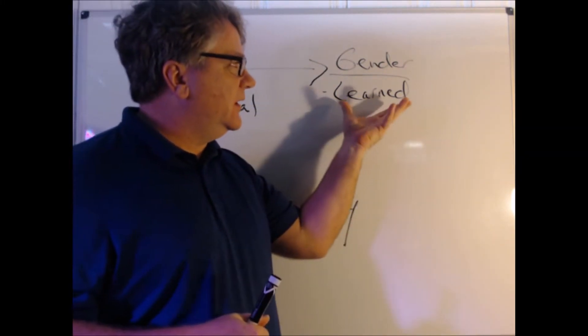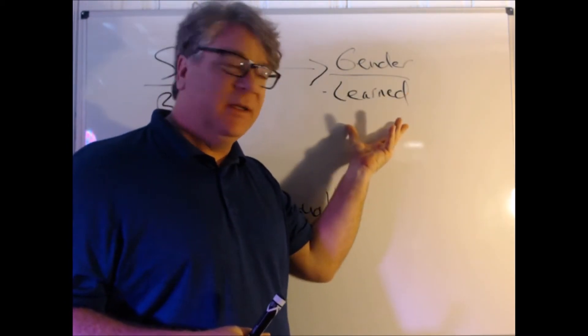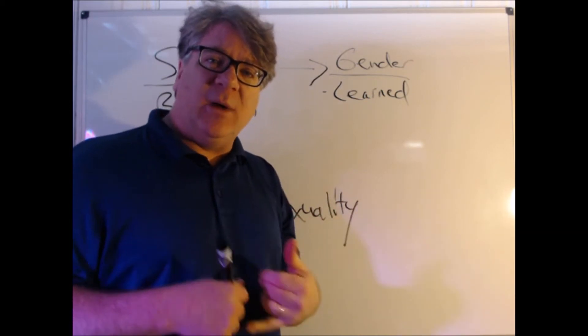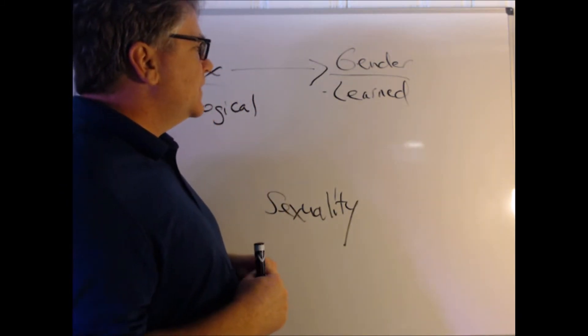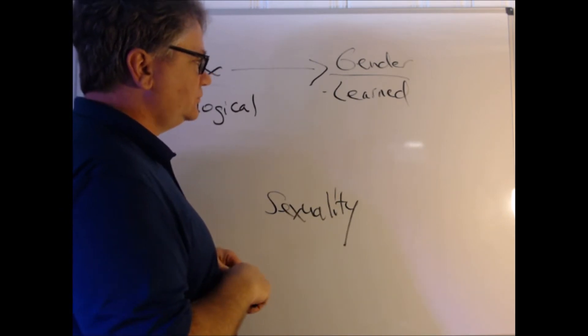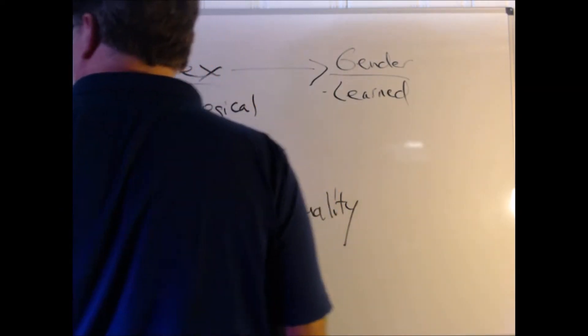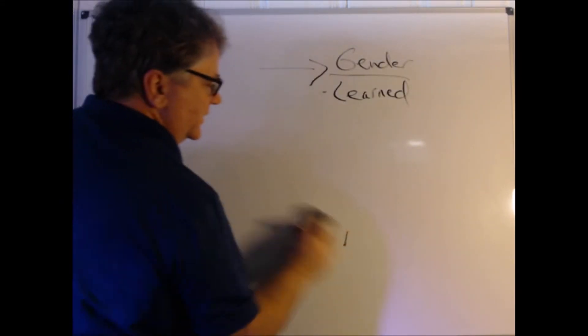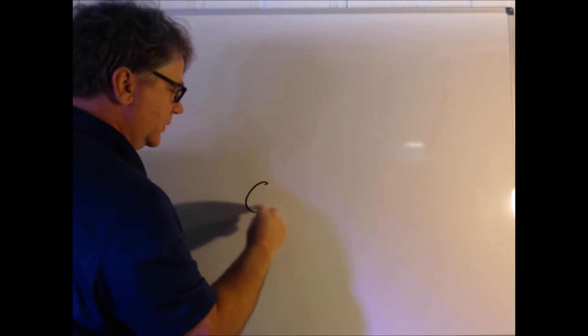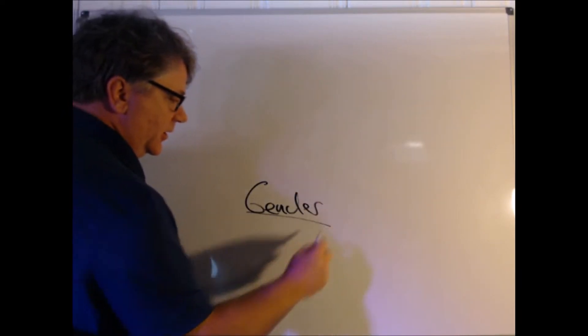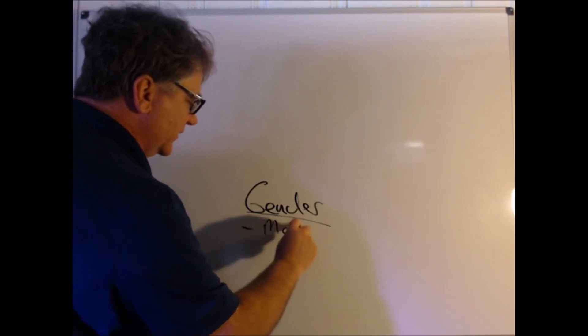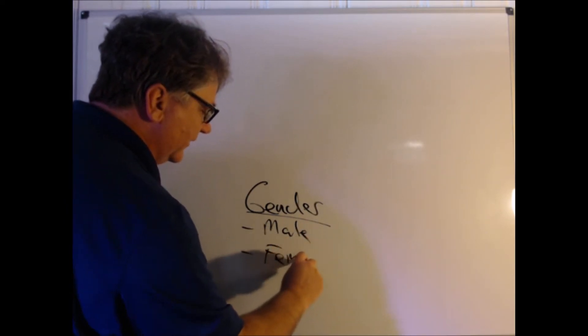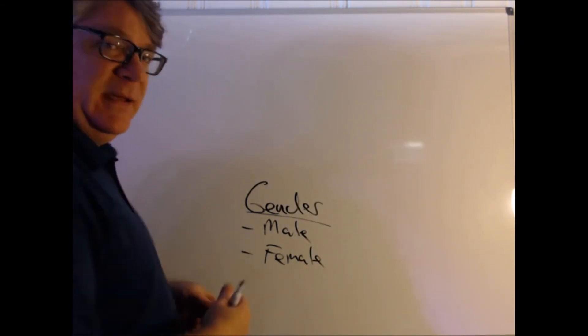If gender is something that is learned, this goes back to socialization. You start thinking about how do we learn to be male or female. Let me show you something. You think about gender, and if we start getting into the weeds on this a little bit, you can think about males and females. If we were in face-to-face class we would be having discussion on this. What does it mean to be male and female?